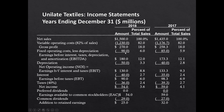Fixed operating costs less depreciation were $90 million in 2018 versus $85 million in 2017. That gives EBITDA — earnings before interest, taxes, depreciation, and amortization — of $180 million in 2018 versus $173.3 million in 2017. EBITDA is important because many businesses are valued on it; it represents the cash flow of the business excluding financing decisions (interest), tax planning (taxes), and non-cash expenses (depreciation and amortization).